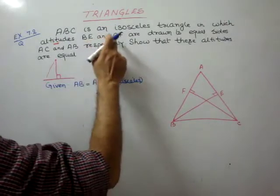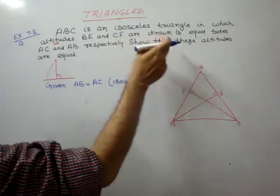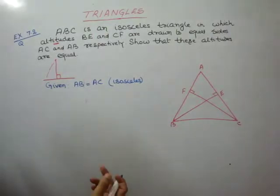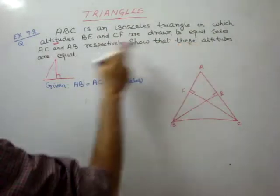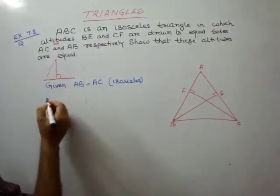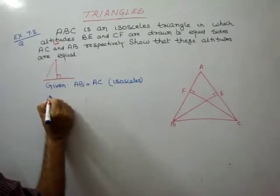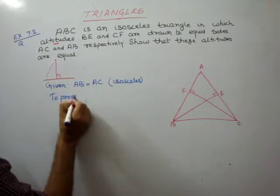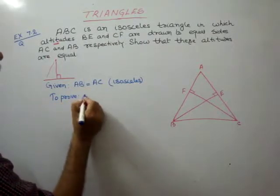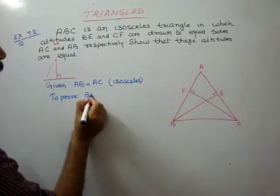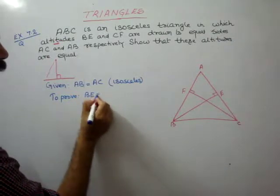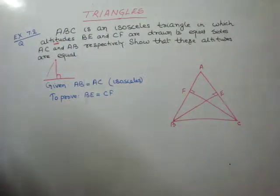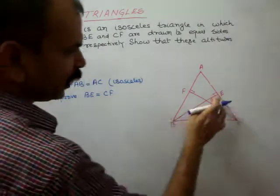And BE and CF are altitudes — that is also given. Show that these altitudes are equal. So our 'To Prove' is: BE is equal to CF. These are the two things we need to prove.